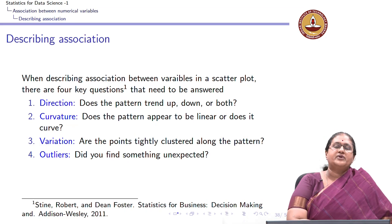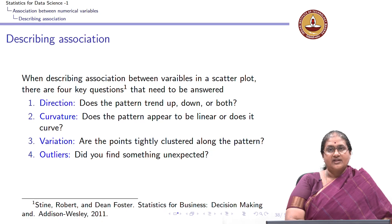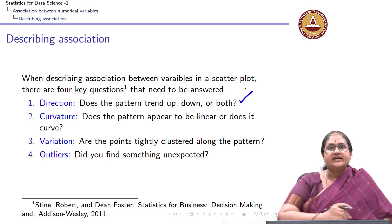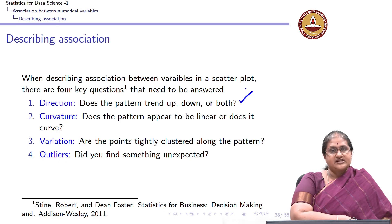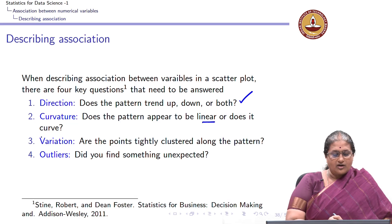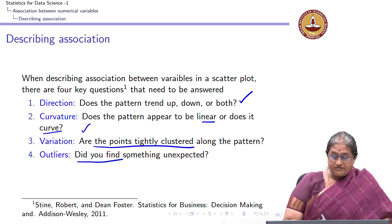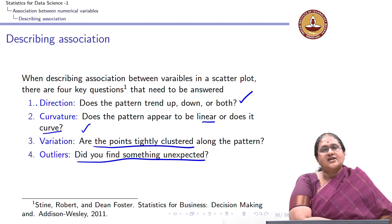How do we describe the association between two variables using a scatter plot? When describing association between two variables, there are four key questions to answer. First, is there a direction — does the pattern trend up or down? Second, is it linear or does it curve? Third, are the points tightly clustered around the pattern or are they spread? And finally, do we find anything unexpected? We will look at each one of these questions in detail.